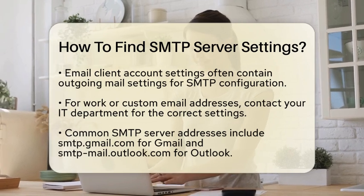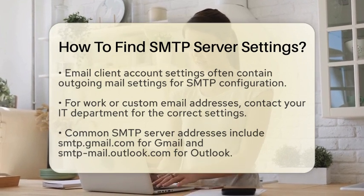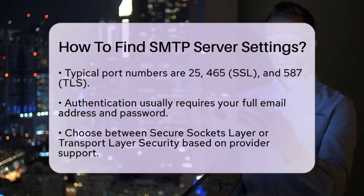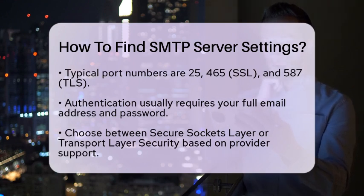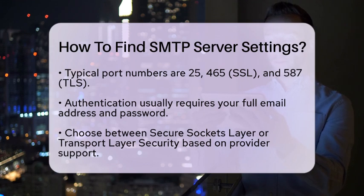Now, let's talk about some common SMTP server settings you might encounter. For example, the server address for Gmail is smtp.gmail.com, while for Outlook, it is smtp.mail.outlook.com. The port numbers you will commonly use are 25, 465 for Secure Sockets Layer, or 587 for Transport Layer Security. Authentication is usually required, so you will need your full email address and password. When it comes to security, choose either Secure Sockets Layer or Transport Layer Security based on what your provider supports.